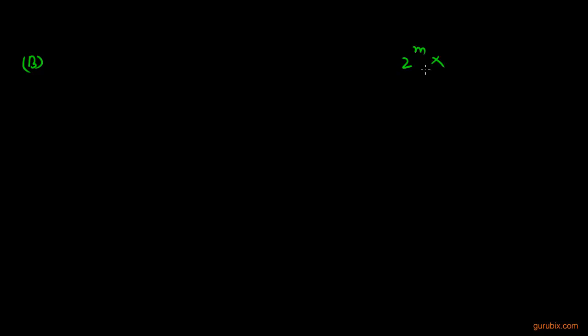In this part we shall discuss fractions which don't have the denominator in the form of 2 raised to the m power and 5 raised to the n power. We shall discuss fractions whose denominator is not of the form 2 raised to the m power multiplied by 5 raised to the n power.